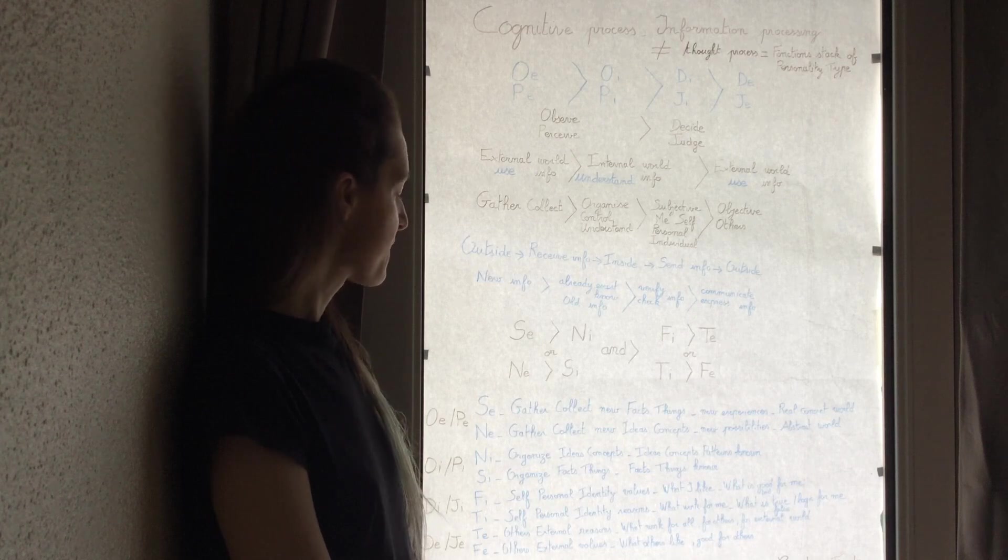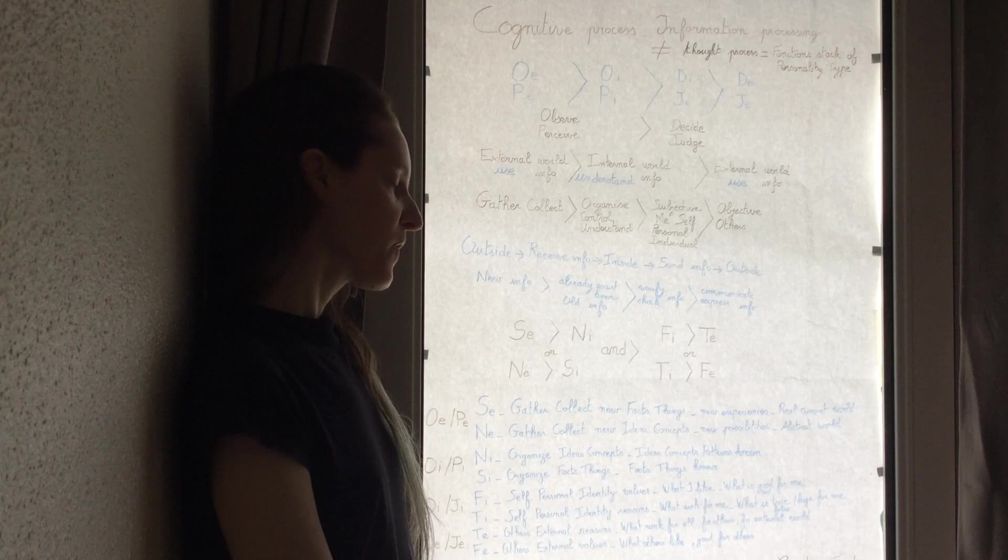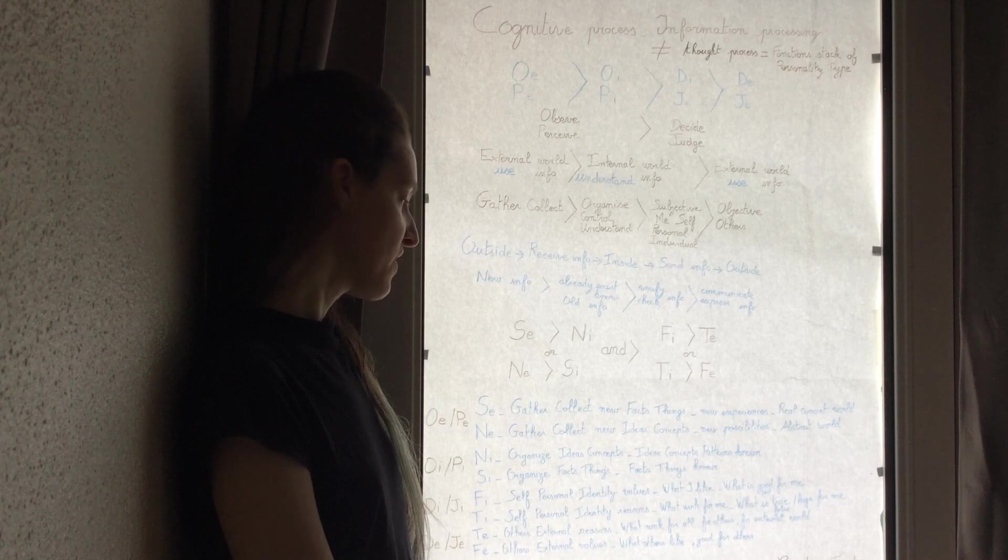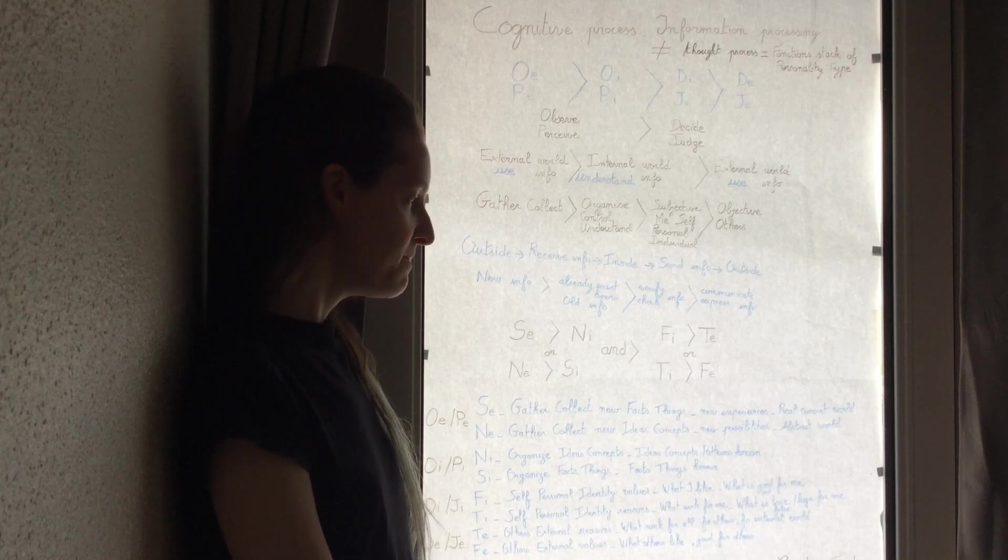The observing, perceiving extroverted function, Se, is gather and collect the new facts, things, the new experiences in the real, concrete world. Ne is gather the new concepts, the new possibilities in the abstract world.